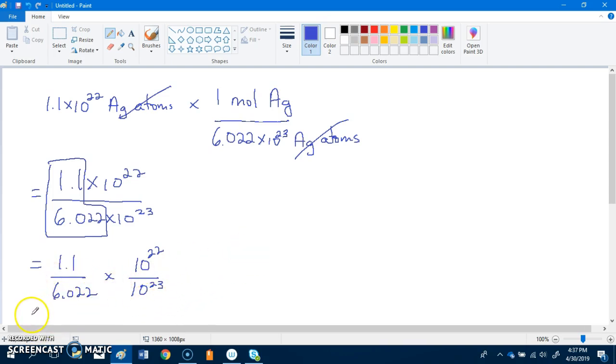What you get here then is 1.1 divided by 6.022 equals 0.1827, multiplied by 10 to the power of 22 divided by 10 to the power of 23. Whenever you're dividing powers that have the same base, you just subtract: 22 subtract 23.